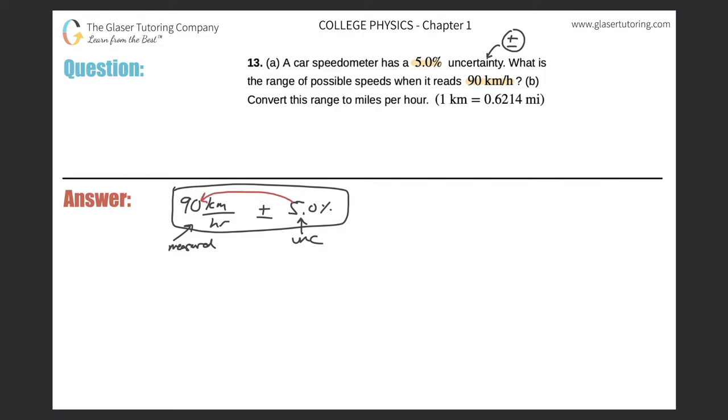All right. So now when it says, back to the question, what is the range of possible speeds? Well, it looks like now we actually have to calculate 5% of 90 because we need to give the range.